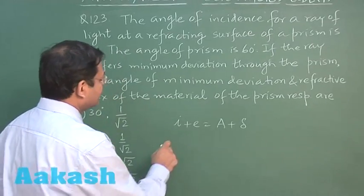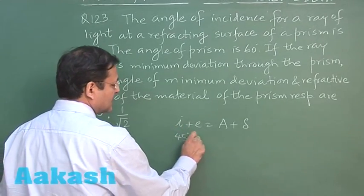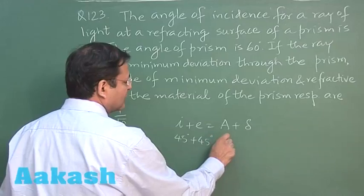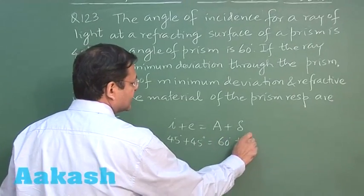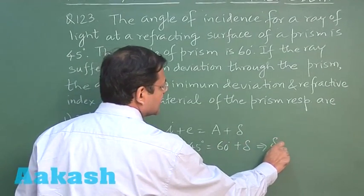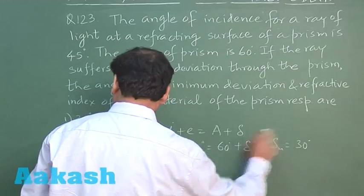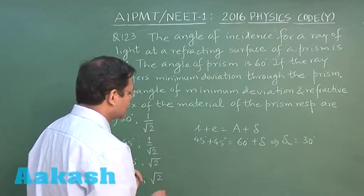So this is 45 plus 45 degree is equal to angle of prism given to you, 60 degree, plus delta. So minimum deviation, this delta m, that comes out to be 30 degree, first part.